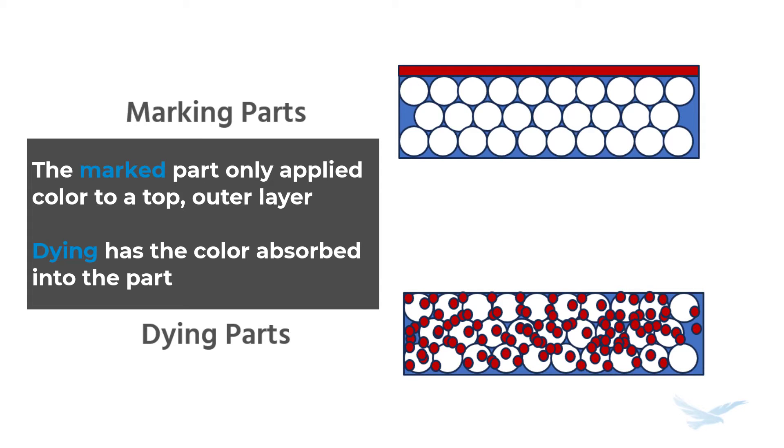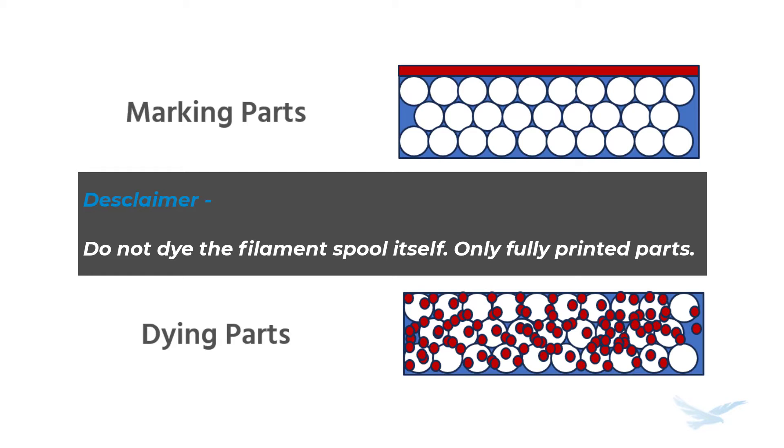Thankfully, most 3D printed materials, especially ones with plastic, can be dyed using coloring agents and warm water. When done correctly, it will apply evenly and give parts a noticeable difference in appearance right away. It may even help with certain aspects of the print, like flexibility and brittleness.